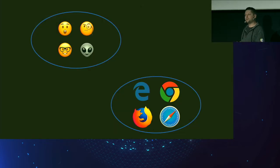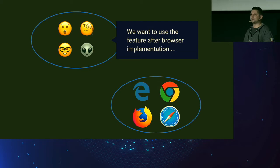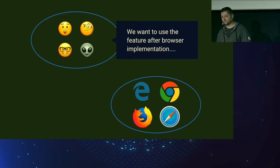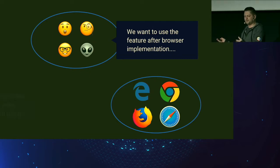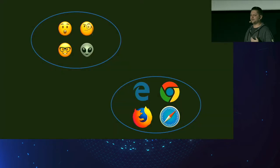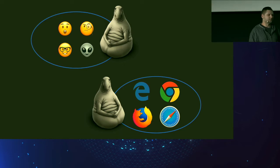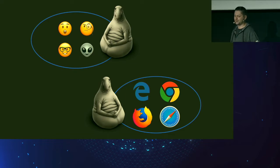So why do we need a project like Houdini? On one side we have developers who want to use a feature once it's implemented in all major browsers, because we want to support all browsers our users could use. On the other side, browsers are waiting to implement features before they're actually used by developers. It's a so-called dependency — literally everybody is waiting. We've waited years to get features like position sticky, which still doesn't work in some browsers.